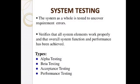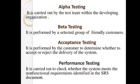The next step is system testing, where the system as a whole is tested to uncover requirement errors. It verifies that all system elements work properly and that the overall system function and performance have been achieved. The types of system testing include alpha testing, beta testing, acceptance testing, and performance testing. Alpha testing is carried out by the test team within the developing organization.